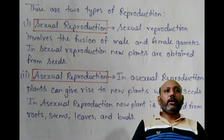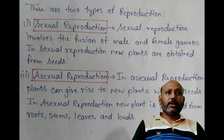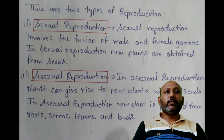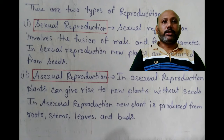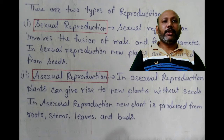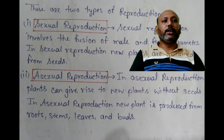There are two types of reproduction in plants. Sexual reproduction involves the fusion of the male and female gametes. In sexual reproduction, new plants are obtained from seeds. In asexual reproduction, plants can give rise to new plants without seeds — a new plant is produced from the roots, stems, leaves and buds.